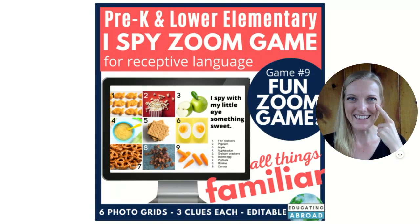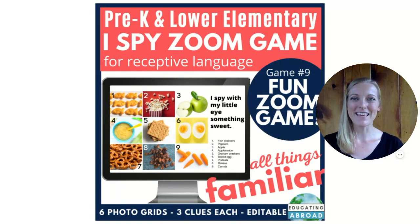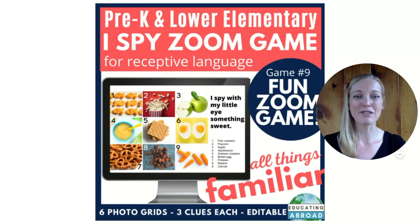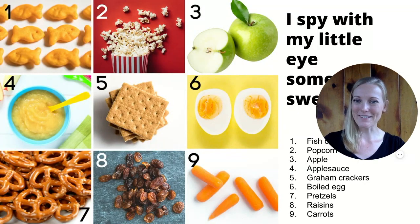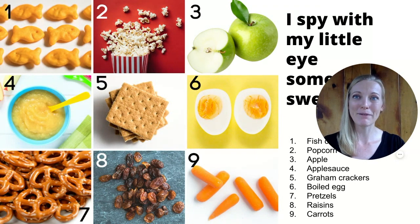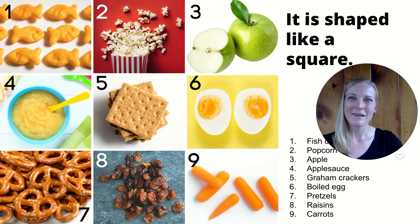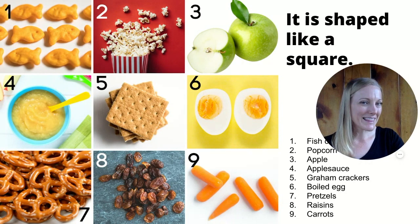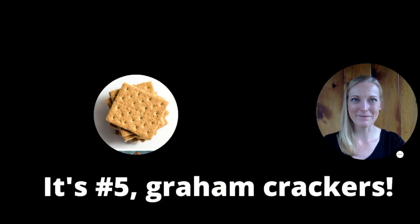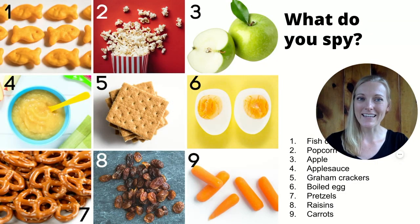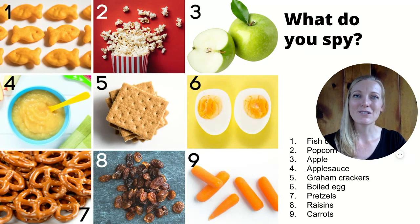I spy with my little eye something that — each game in these I Spy descriptive and receptive language skills games includes six different rounds. This particular game is showing all things familiar. Each round has a grid of either six or nine photos that are related to one another and three editable clues. This game is great for classifying and discriminating new information, because with each clue the students get a little bit closer to discovering the correct answer. The final slide on each round includes a spot that says 'What do you spy?' giving students the chance to spy something different and create their own clues.